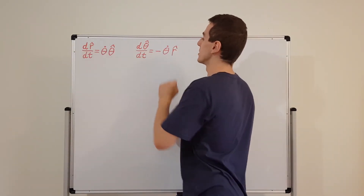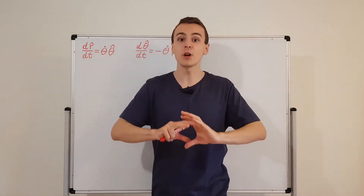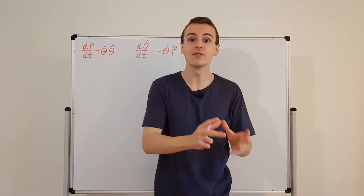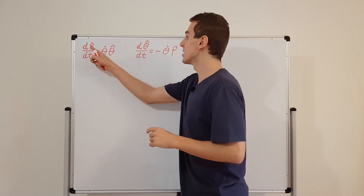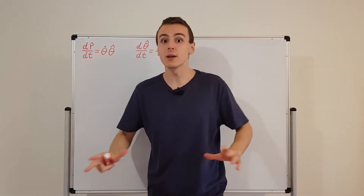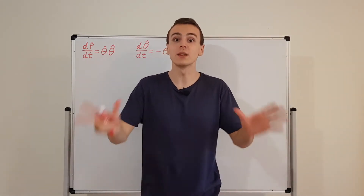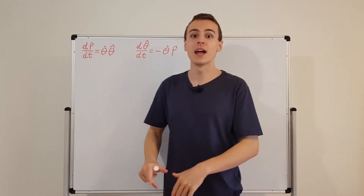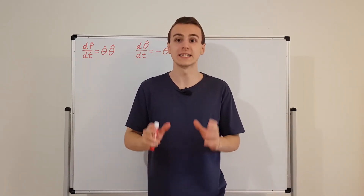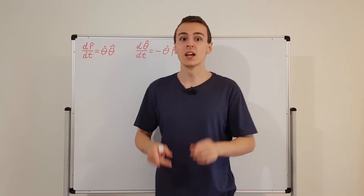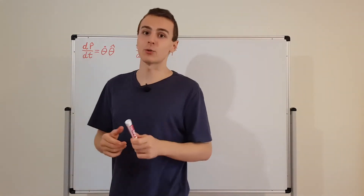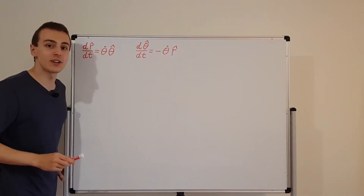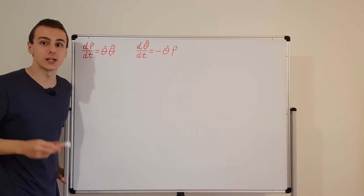Using these definitions, we're going to find an expression for the velocity vector in terms of these unit vectors — purely in the polar coordinate system. We're going to abandon the Cartesian coordinate system and just look at the polar coordinate system.